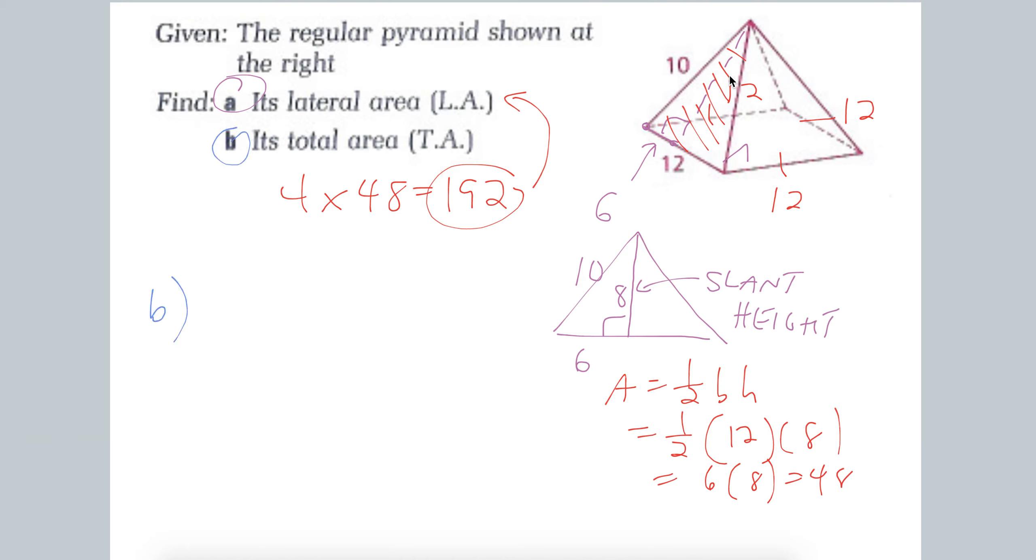And then to find the total area, all we do is add that with the area of the base. And the area of the base is a square. So it's just length times width, or 12 times 12, or 12 squared.